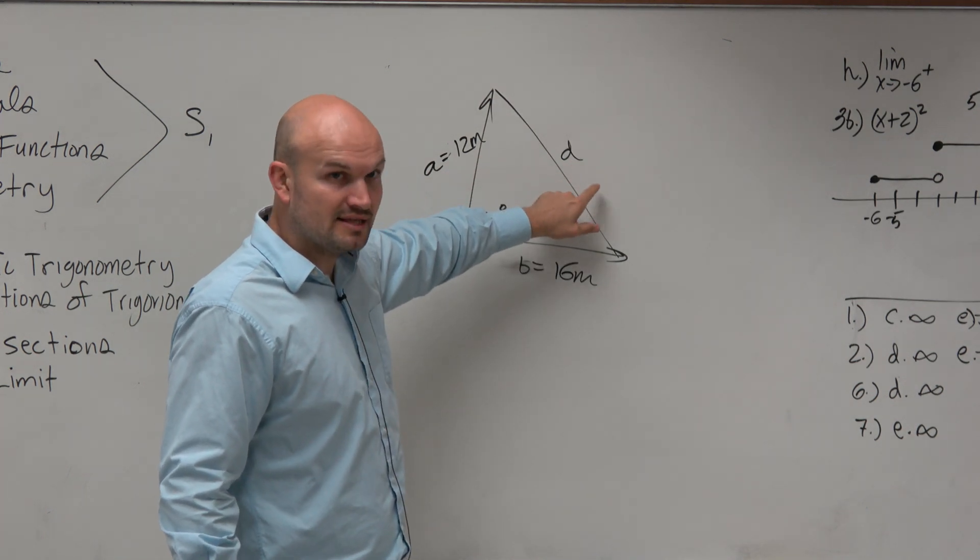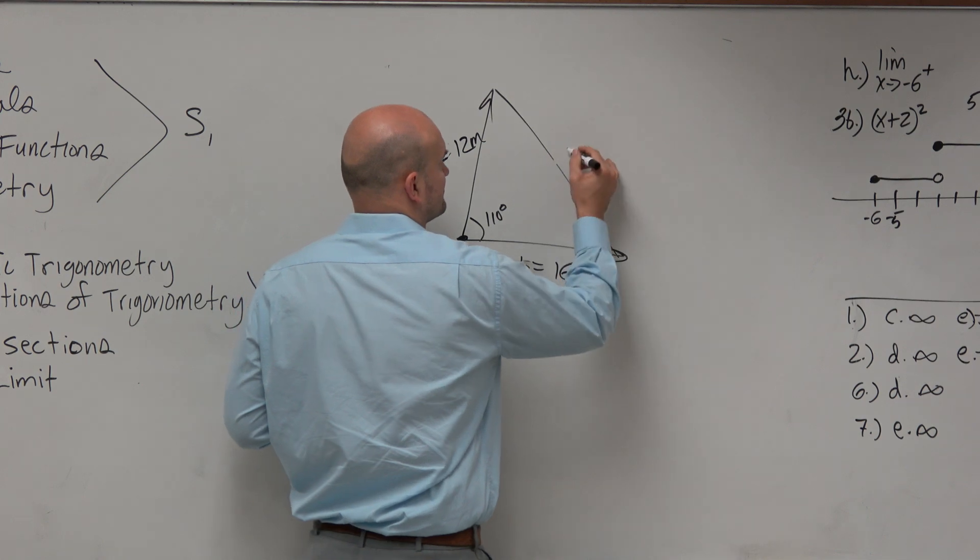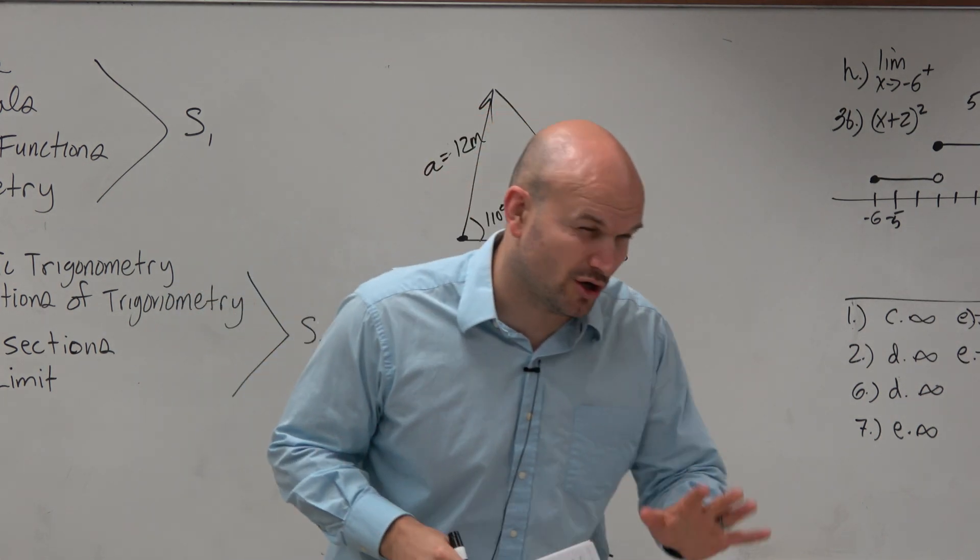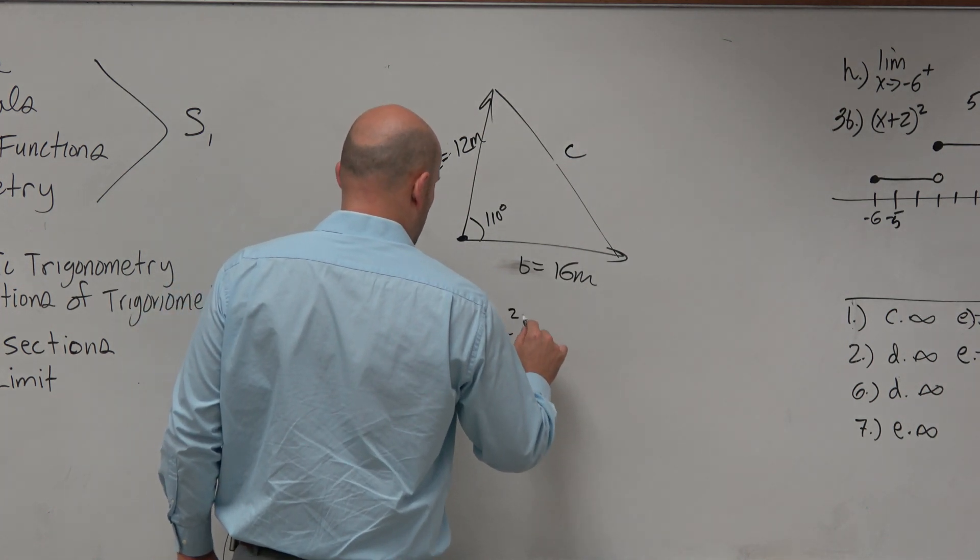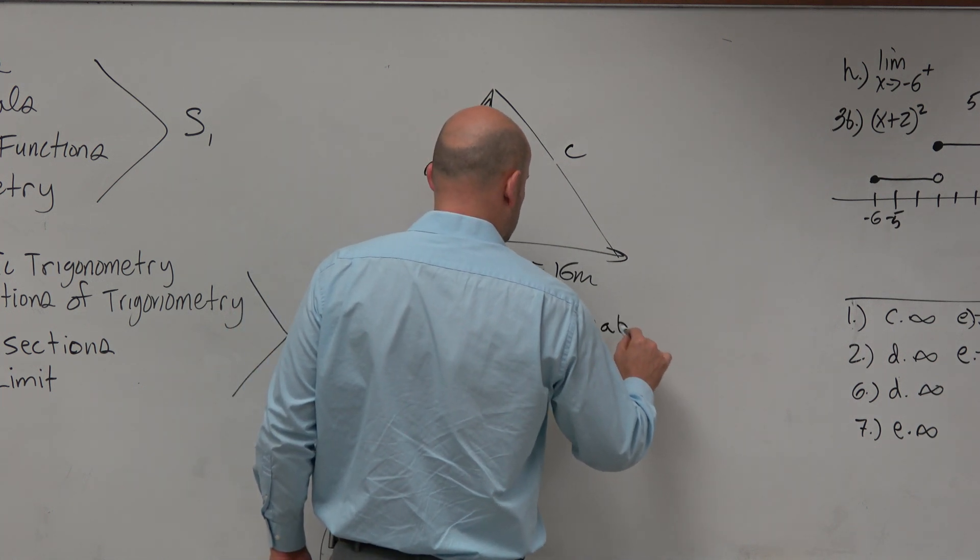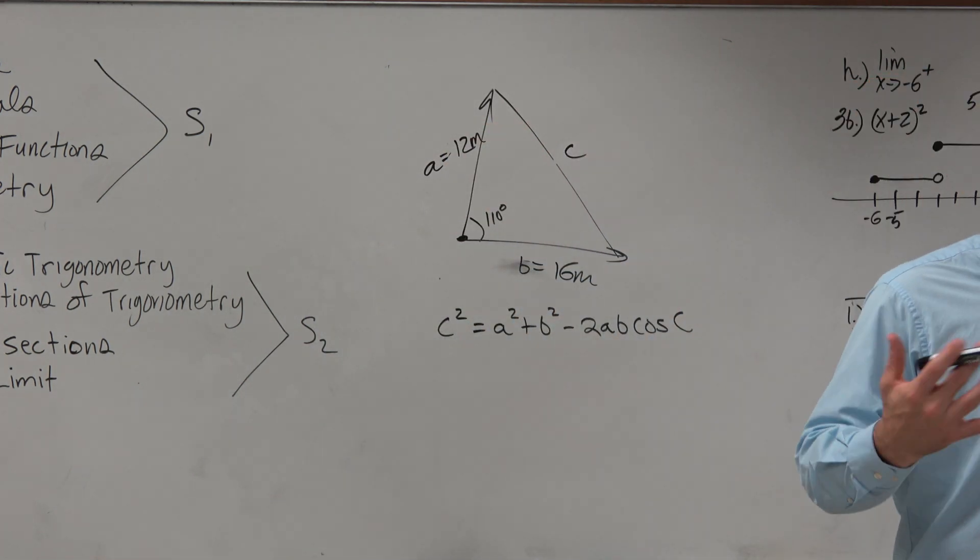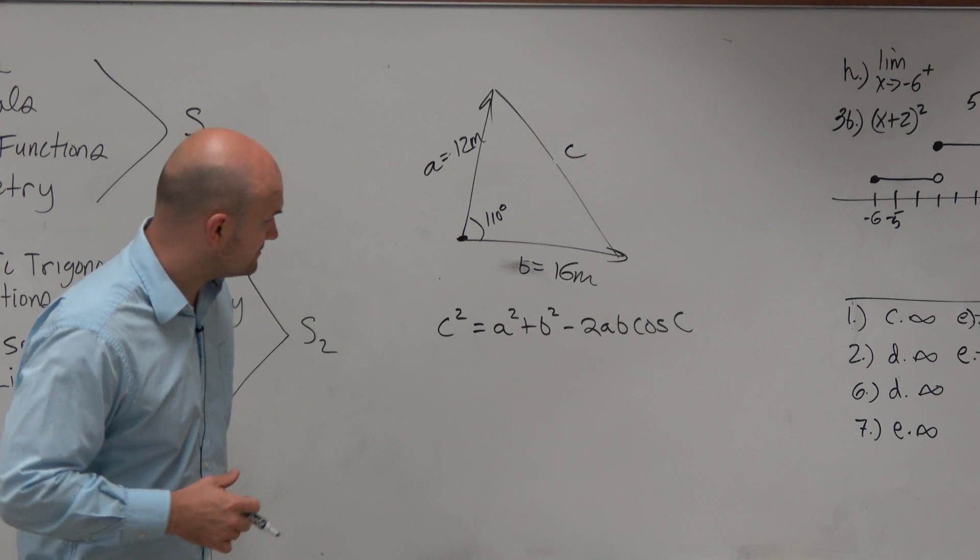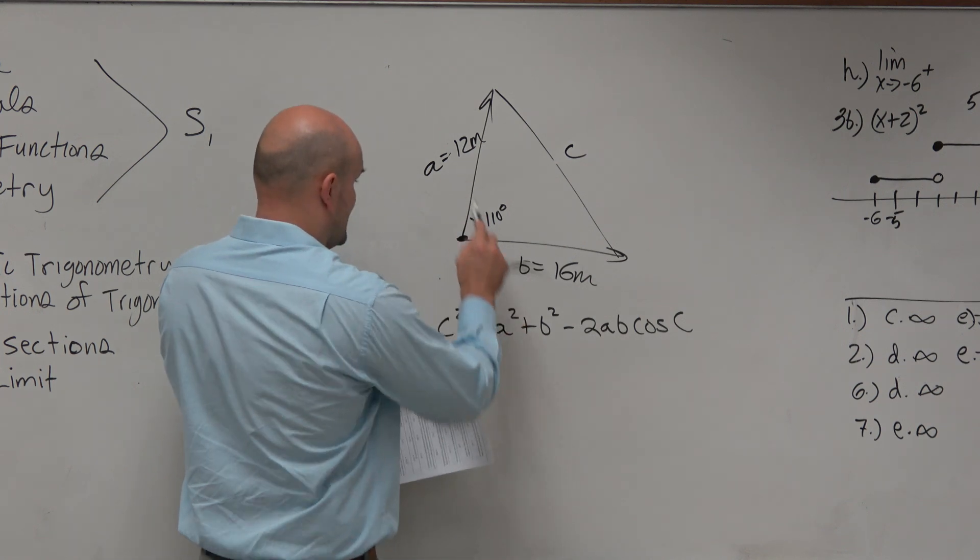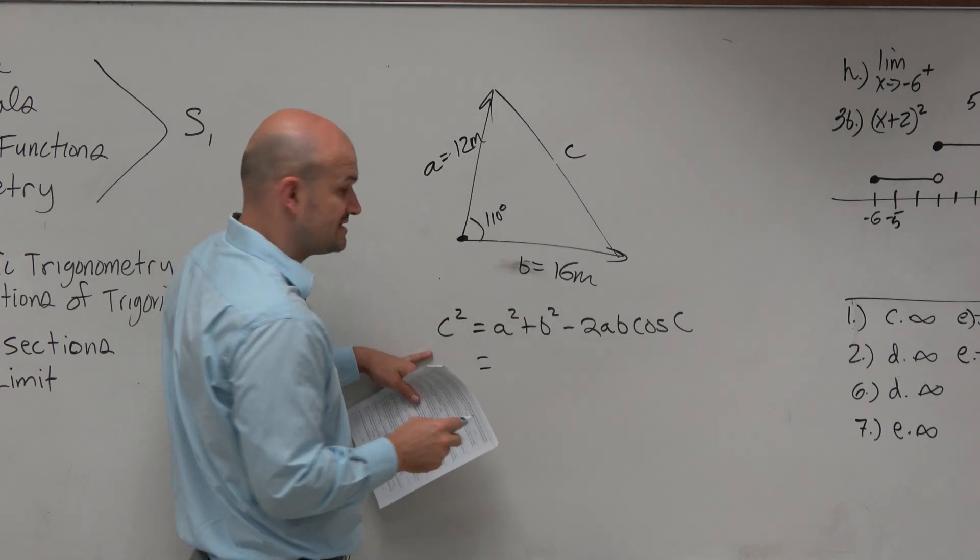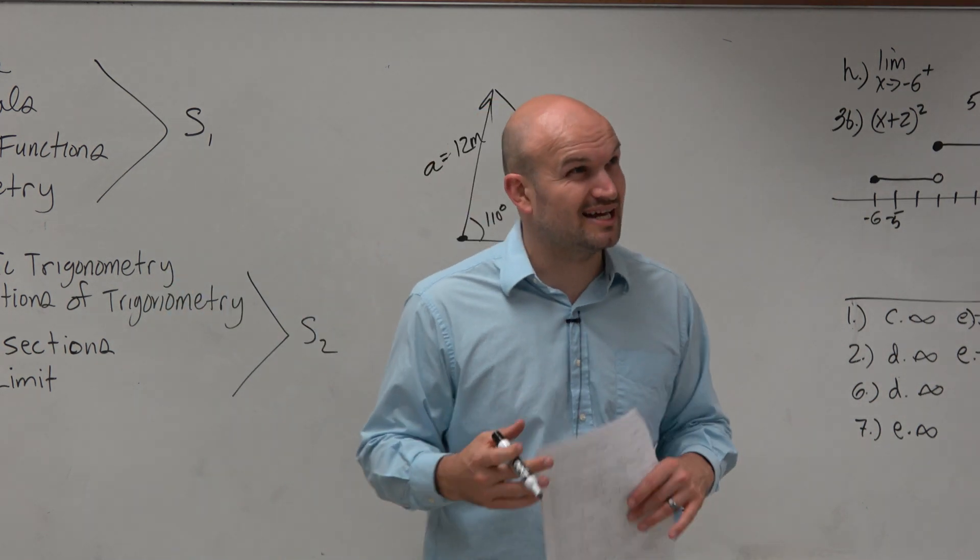Since we have the law of cosines, let's not use D, let's do C. Let's see if off memory I can remember it. Hopefully you guys have your sheet that you can verify that I'm doing this correctly. C squared equals a squared plus b squared minus 2 times a times b times the cosine of C. That is the law of cosines based off of my memory. I would love it if somebody would just verify that I rewrote that correct. So we don't know C, that's what we're going to solve for.